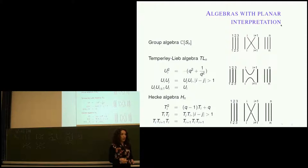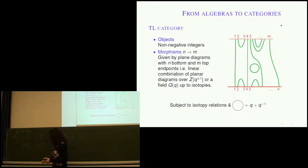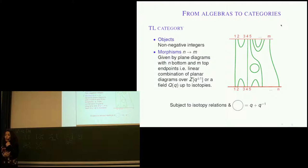A feature and a bug of Temperley-Lieb algebra is that you have to fix the number of endpoints, which means you can only work with tangles that have a fixed number of endpoints. There's a way around that restriction: define a Temperley-Lieb category. Objects are non-negative integers — represented as collections of points on a horizontal line. So for example, I can have an object I call four and an object I call two.